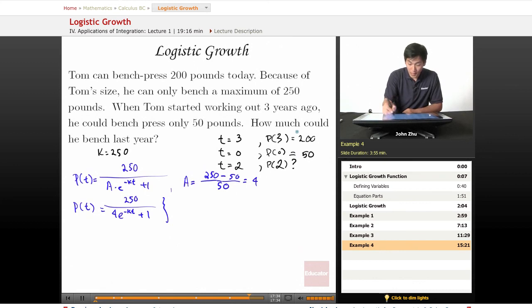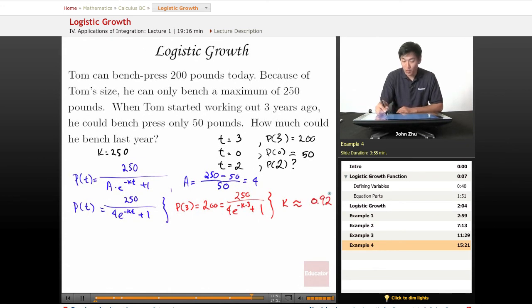We know that right now he can bench 200 pounds. So P of three equals 200 equals 250 over 4 times E to the negative K times 3 plus 1. And solving for K, K is going to equal about 0.92, so close to 1.